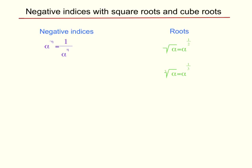The rule for negative indices is a to the power of negative n equals 1 over a to the power of n. The way we solve this is we put a to the power of negative n over 1 and we bring the pronumeral with the negative power to the denominator.